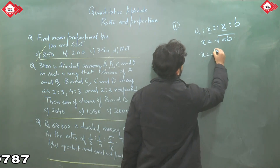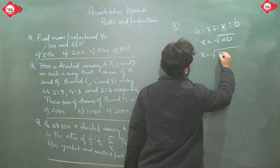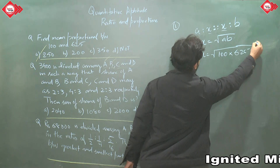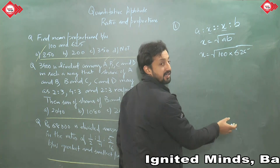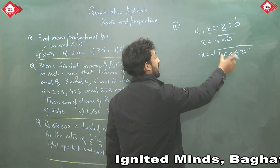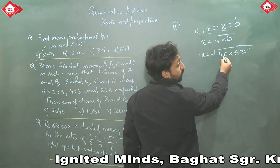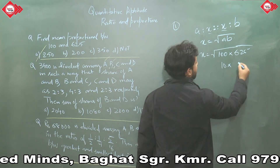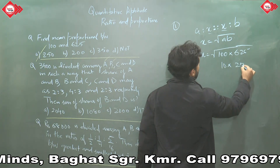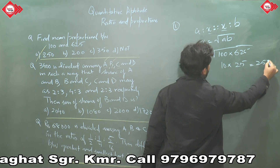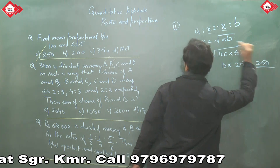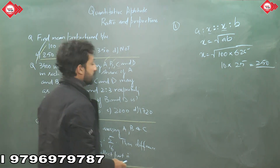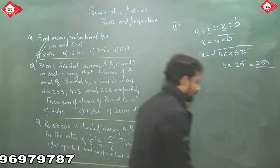Here, a is 100 and b is 625. Don't multiply them together — instead separate them under the root: √100 is 10 and √625 is 25, so the answer is 10 × 25 = 250. This is your correct answer: 250.